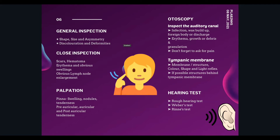Insert the otoscope a little more to visualize the tympanic membrane. First comment on color — pinkish gray is normal, pearly white is normal, red indicates infection, and scarring can indicate tympanosclerosis. Then look at the structure: comment on any perforation, grommet insertion, or bulging. Bulging indicates infection; if the membrane is retracted, this suggests Eustachian tube dysfunction.